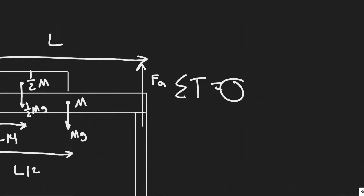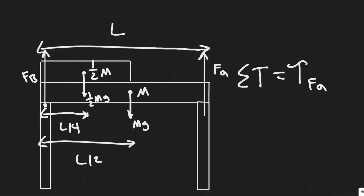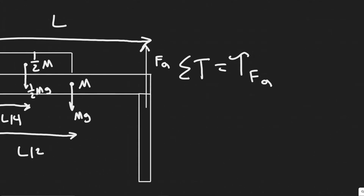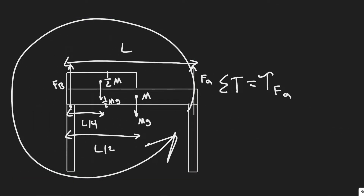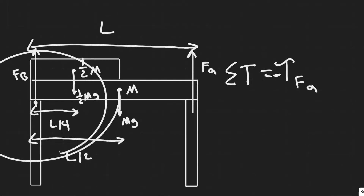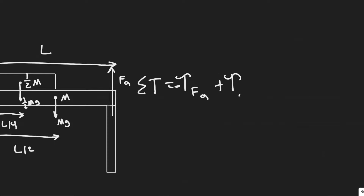The sum of the torques includes the torque due to FA, the torque due to Mg, and the torque due to one-half Mg. Keep in mind, when you sum torques about a point, if a force causes clockwise rotation the torque is positive; if counterclockwise, it's negative. FA pushes up and causes counterclockwise rotation, so it's negative. Both gravity forces rotate clockwise about this point, so they are positive.